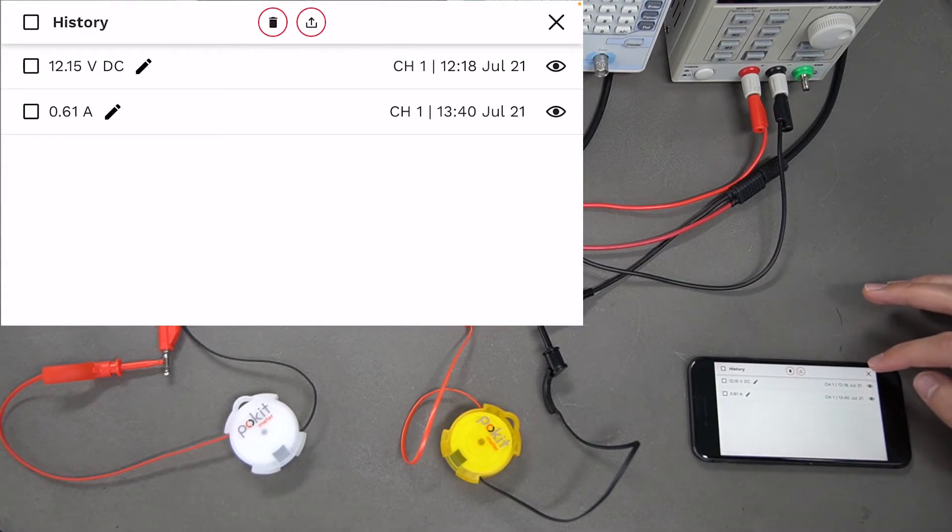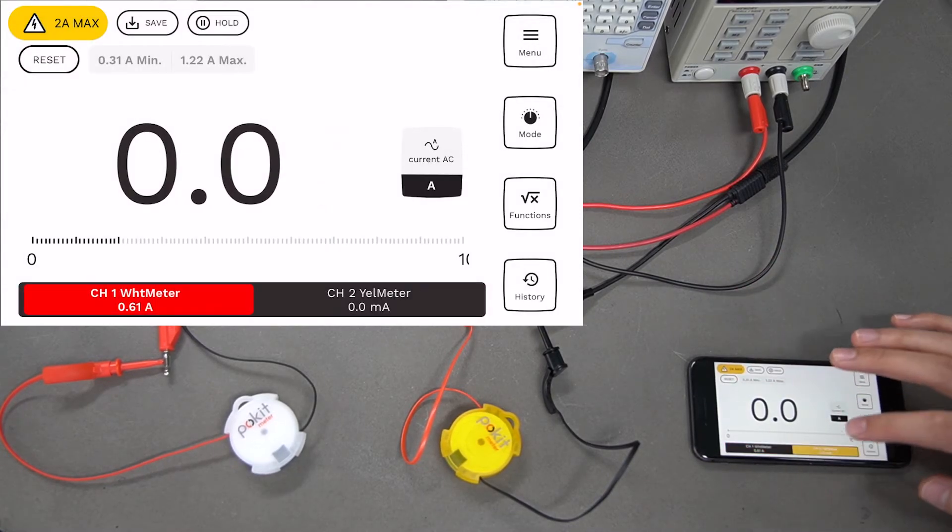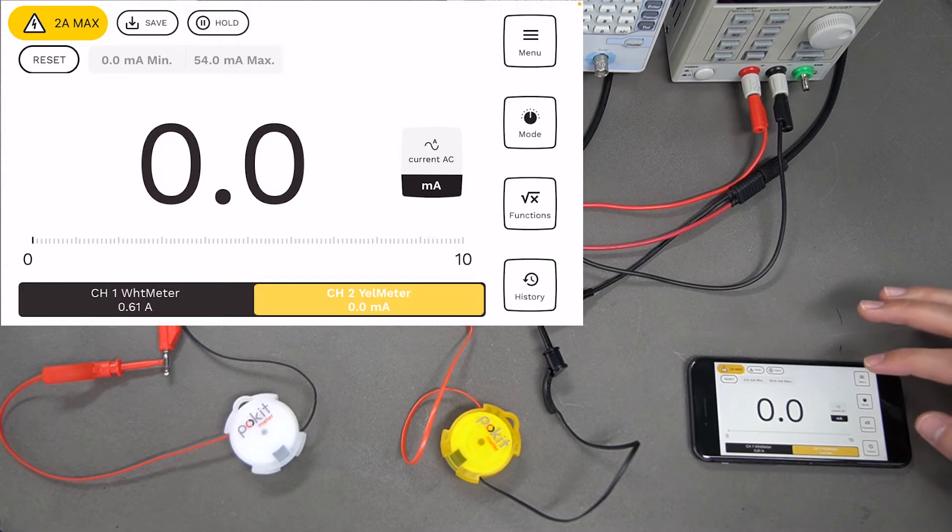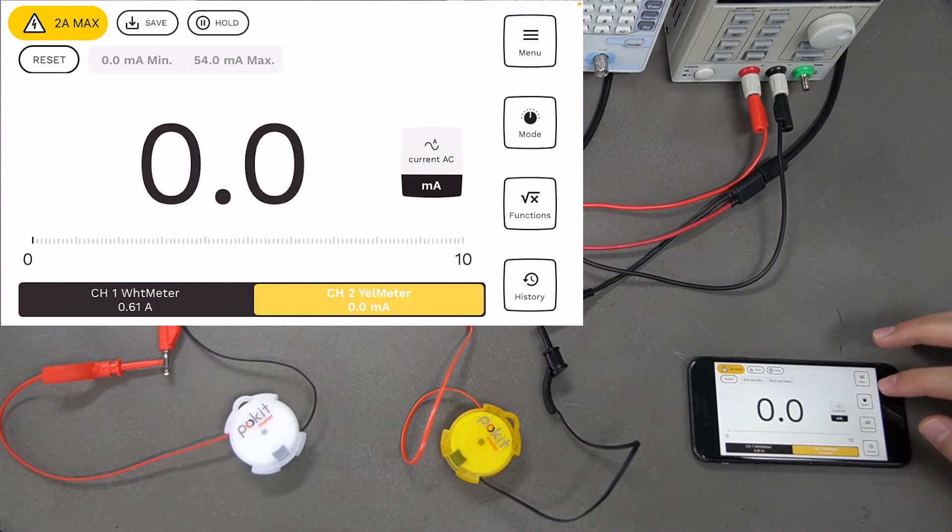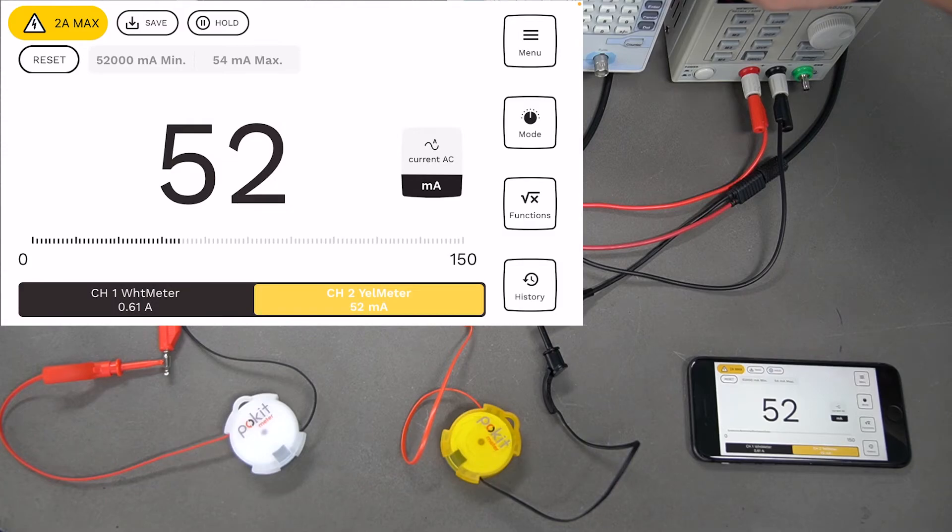Now we'll switch over to that yellow one so we can do some AC readings. Let me turn this on. You can see that changing there.